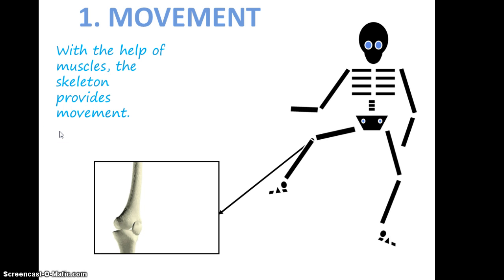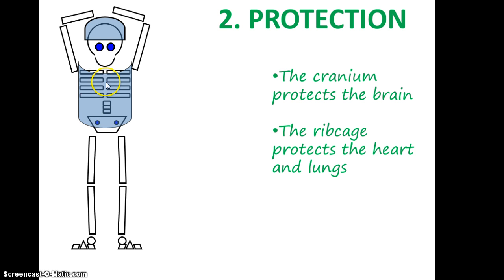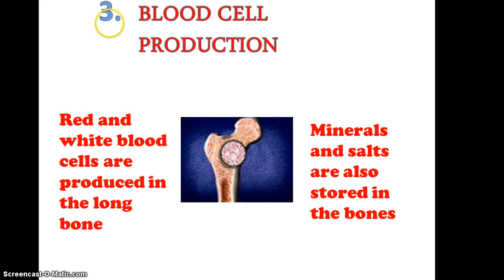Movement occurs with the help of the muscles and always occurs at joints. This is where you have the articulation of two bones at a joint. For protection, the cranium protects the brain and the rib cage protects the heart and the lungs. These are usually made up of flat bones — a good example being the sternum.